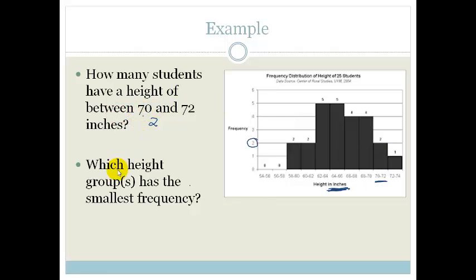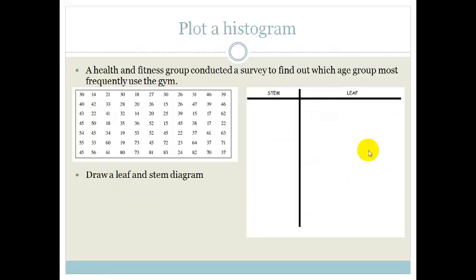The next type of question says, which height group or groups has the smallest frequency? So obviously we could say these have the smallest frequency because they've got zero. So there are no students between the heights of 54 and 58. But if they said no, there must be some frequency, we're not talking about zero frequency, then the smallest frequency would actually be this one over here, which is between 72 and 74. So you understand that's how we read our histogram.